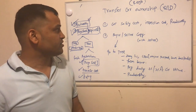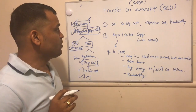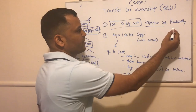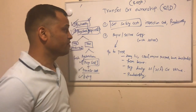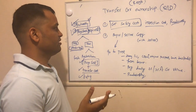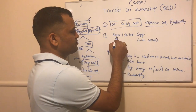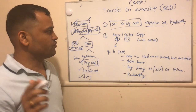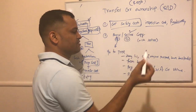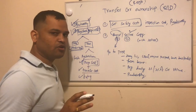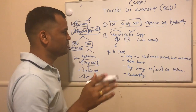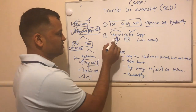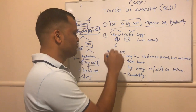To transfer the registration of the car, you can do it online or with paper documents. With paper documents, you have to get the car safety certificate — also called the inspection certificate or safety certificate — from the seller. There will be two forms: a buyer's form and a seller's form. You have to print out these two forms. The seller will give you the seller's form, and you have to fill out the buyer's form. I will show you on the computer how to fill that form and submit it to the transport department.